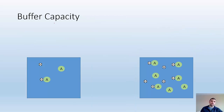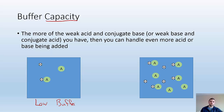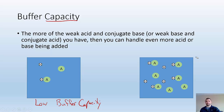Buffer capacity — how much acid or base can the buffer handle? The more of the weak acid and conjugate base that you have, the more acid and base you can handle being added. For example, this would be a low buffer capacity because it's only got a couple of the acids and conjugate bases. Whereas here we have a lot more acids and more conjugate bases, so this can handle more stuff because there's more weak acid and conjugate base available.